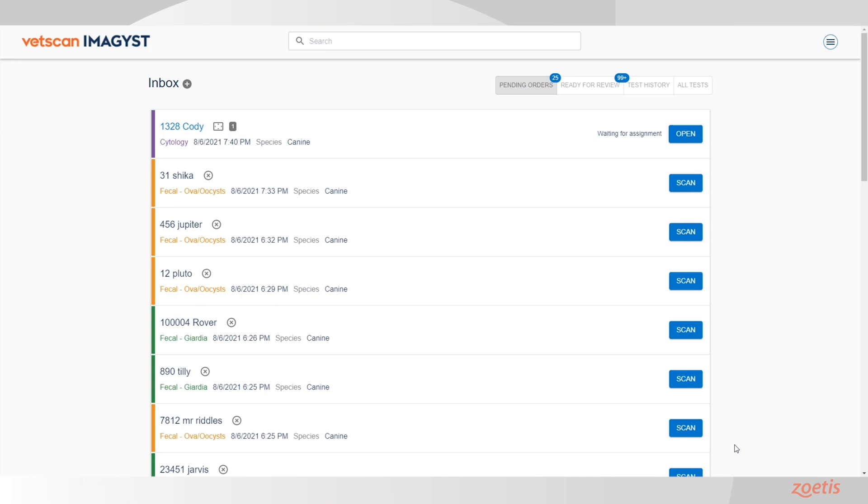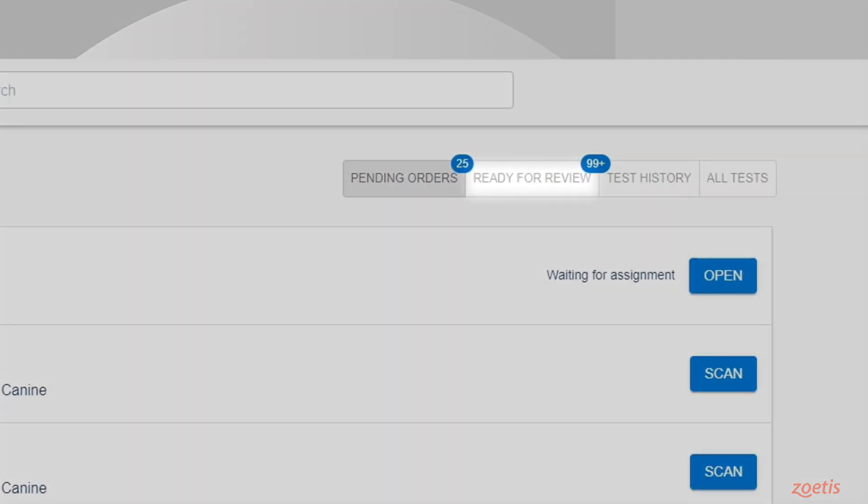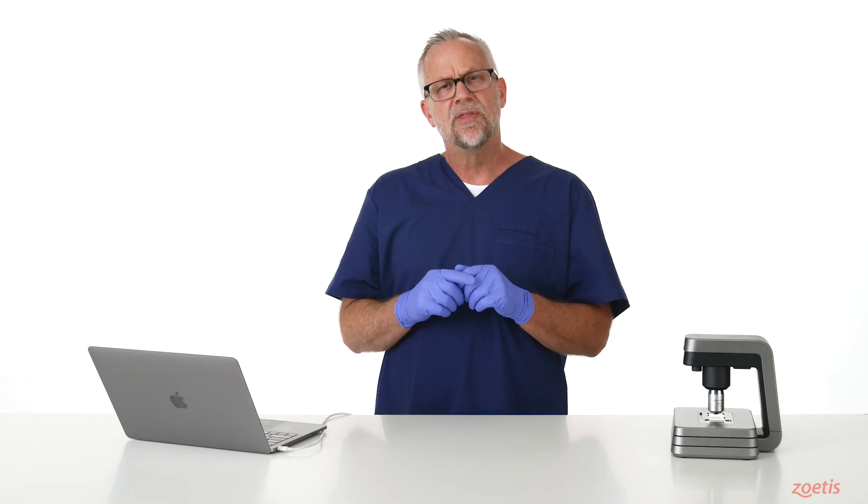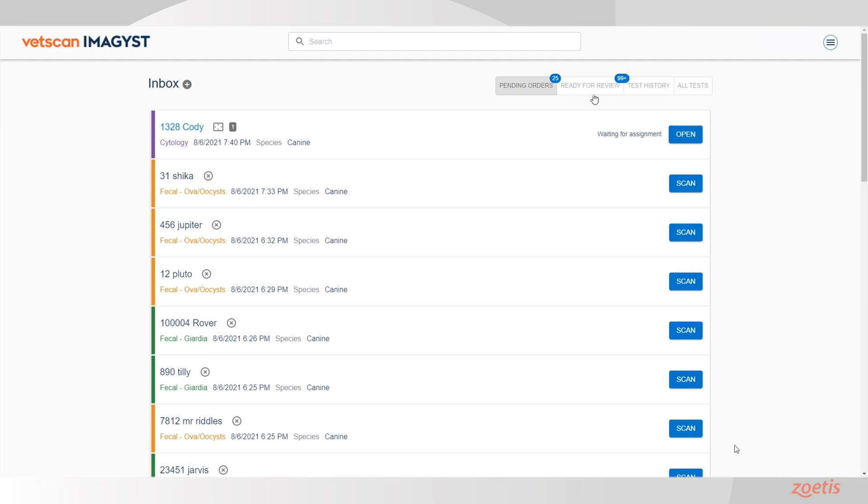Your test order has now been submitted. At the top of the inbox, you're going to notice four tabs. One is labeled Ready for Review. When a pathologist has finished reviewing your test order, the results will appear under that tab.